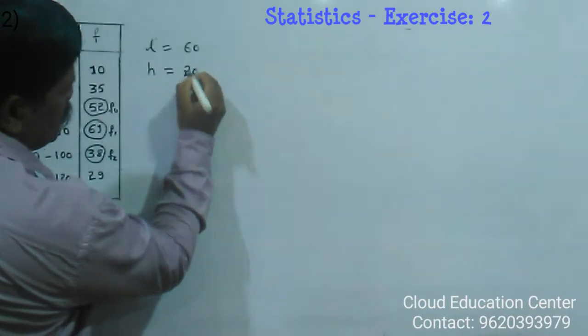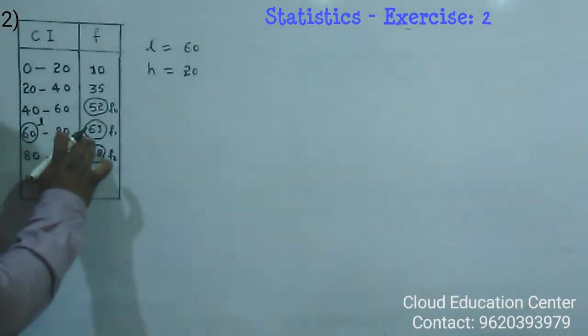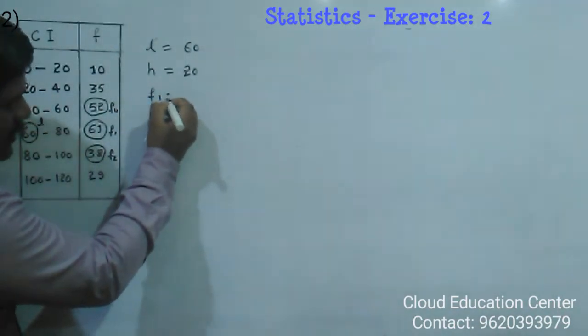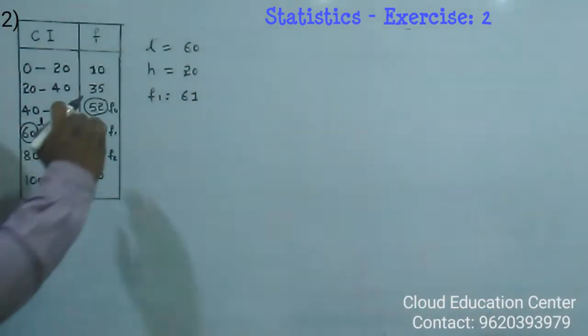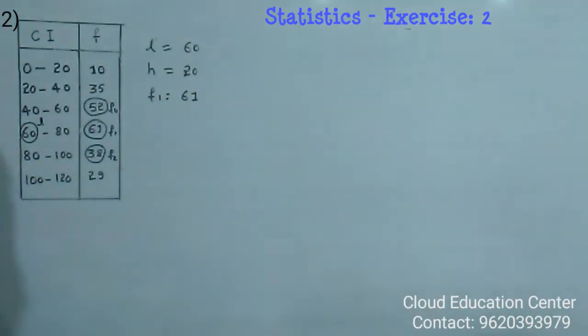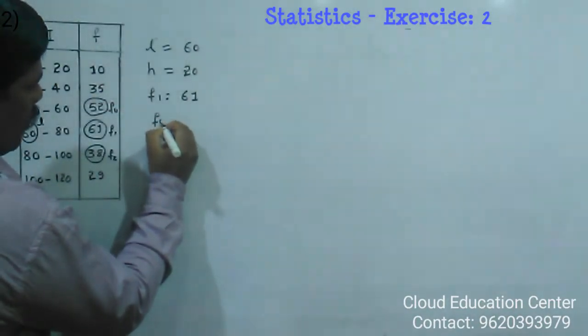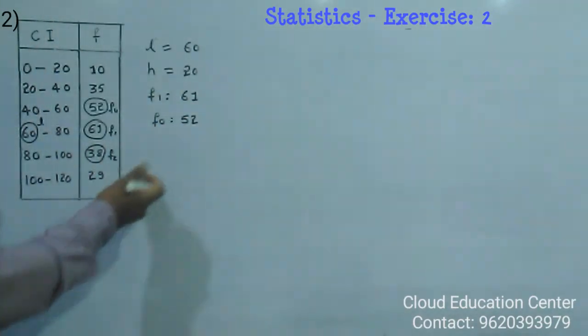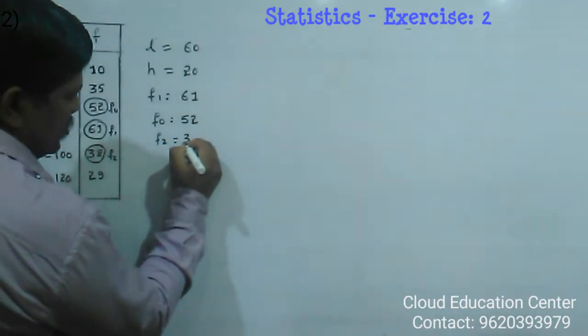The frequency of the modal class is F1, that is 61. And the preceding of the modal frequency is called F0, that is 52. And the succeeding of the modal frequency is F2, that is 38.